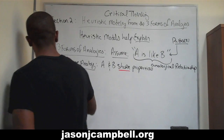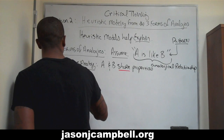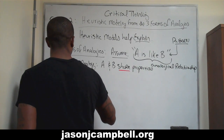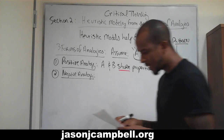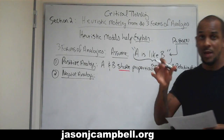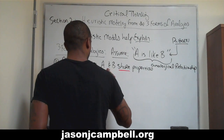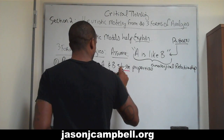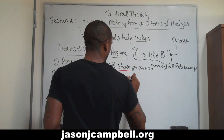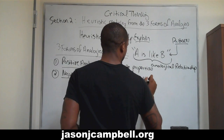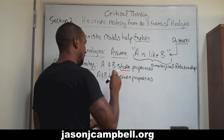Number two is a negative analogy. All this says is A and B do not share properties. Simple enough — A and B do not share properties.